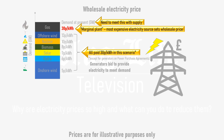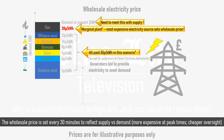Any generators who've signed long-term power purchase agreements with wholesalers — which guarantee a set price per kilowatt hour for all of the electricity produced over the lifespan of the generator in question — will receive whatever price was agreed in the PPA. This is common for generators with high capital expenditure and low operating costs, like onshore wind farms and solar farms. The wholesale price is determined every 30 minutes, reflecting changes in grid demand and the cost and quantity of electricity from different generators.